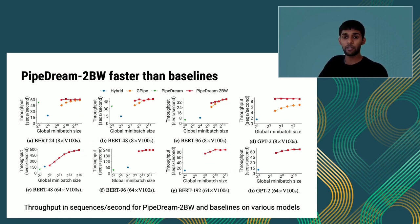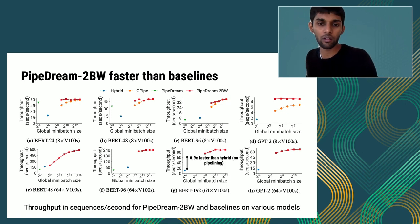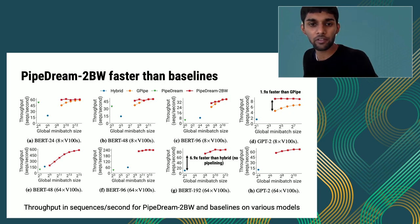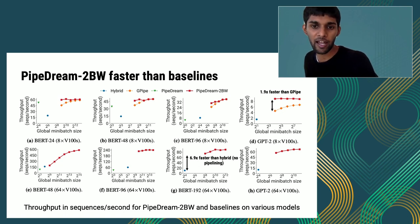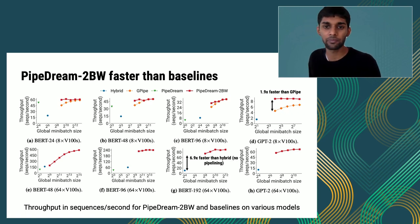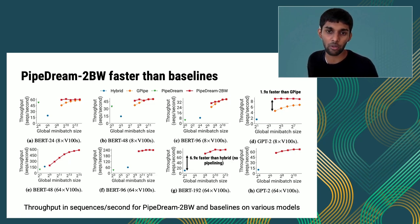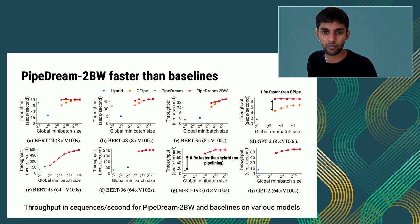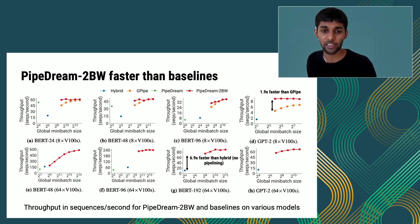We also observed that Pipedream 2BW is faster than approaches that do not use pipelining. In these graphs, we show throughput in sequences per second for Pipedream 2BW (in red) versus the various baselines. Pipedream 2BW is up to 6.9x faster than approaches that do not use pipelining, and up to 1.9x faster than GPipe, since it does not introduce periodic pipeline flushes that limit throughput.